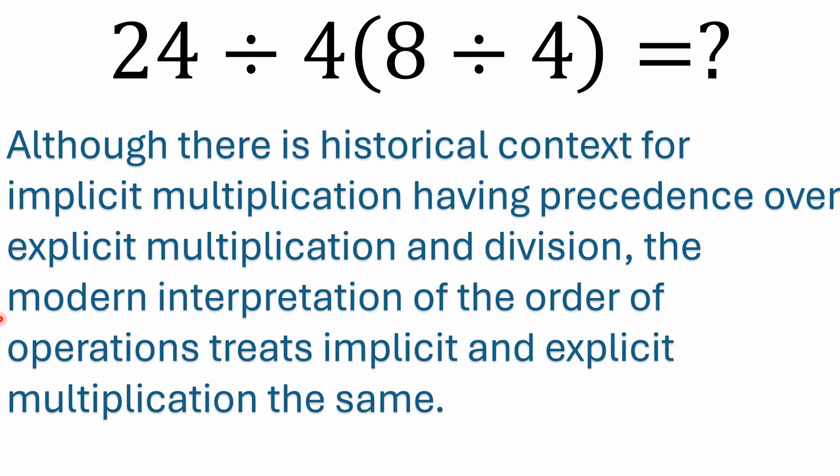Although there is historical context that I mentioned for implicit multiplication having precedence over explicit multiplication and division, the modern interpretation of the order of operations really treats implicit and explicit multiplication the same. If you're looking at PEMDAS or BODMAS or any of those acronyms, multiplication and division are considered to have equal precedence and they're just solved left to right. There's no precedence given to implicit multiplication.